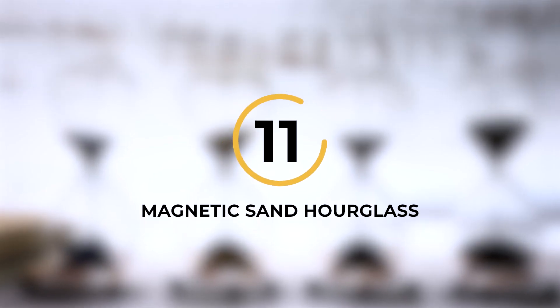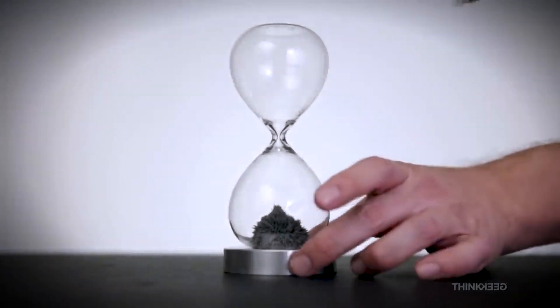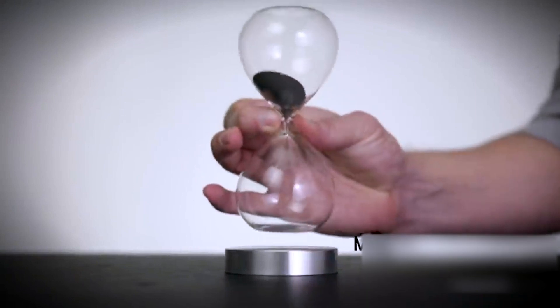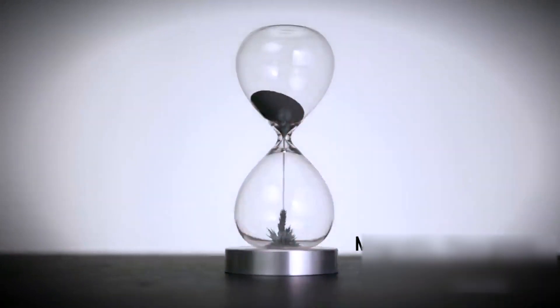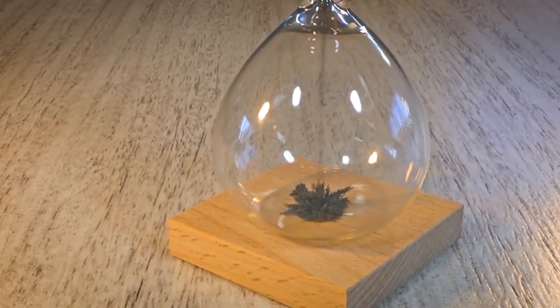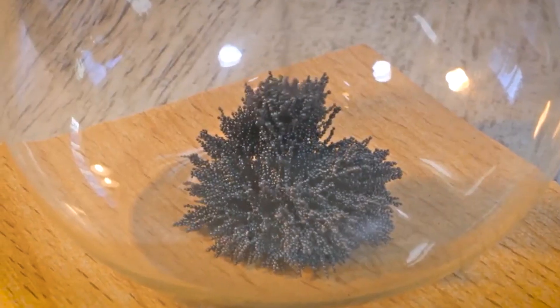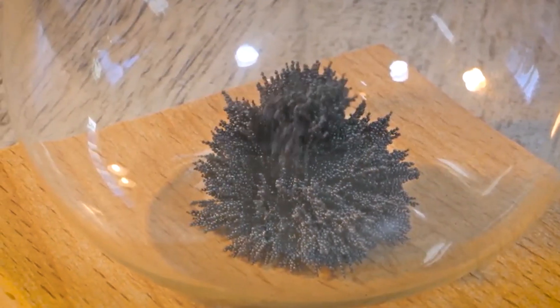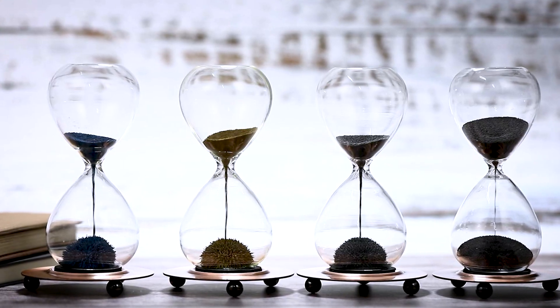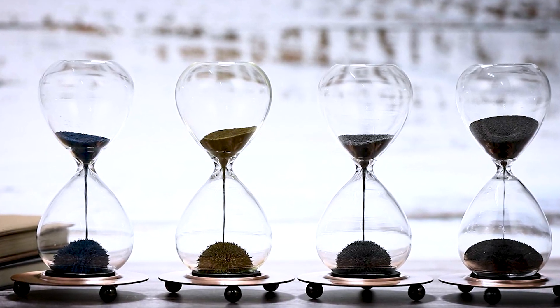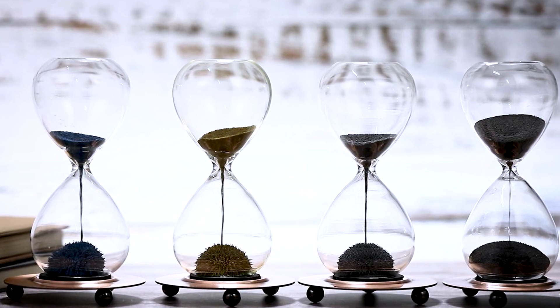Number 11. Magnetic Sand Hourglass. The Magnetic Sand Hourglass is a mesmerizing kinetic gadget that combines the beauty of a traditional hourglass with the captivating power of magnetism. Instead of grains of sand, this unique hourglass is filled with fine magnetic particles that create stunning patterns as they fall through the narrow neck. As the sand flows through the hourglass, it forms intricate and ever-changing shapes guided by the invisible magnetic forces at play.